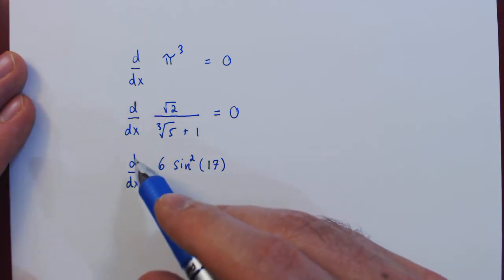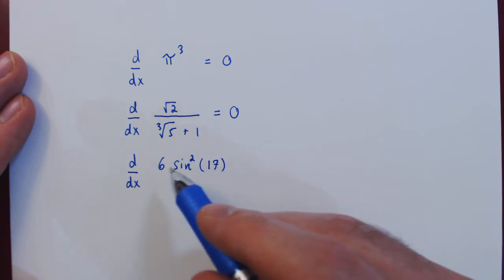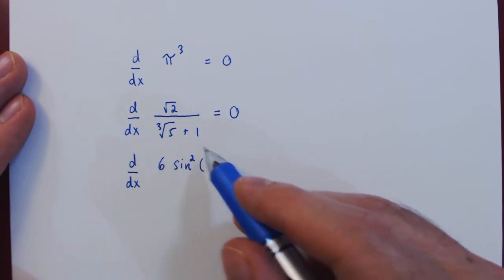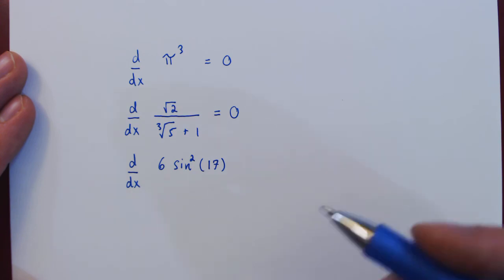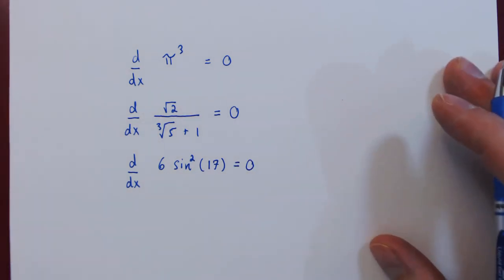Well, don't be fooled by the presence of a trigonometric function. Again, we differentiate with respect to the variable x, but in the expression, there is no variable. Everything is a constant, so the whole expression is again a constant. Therefore, the derivative is again equal to 0. And that's it.